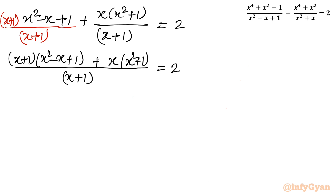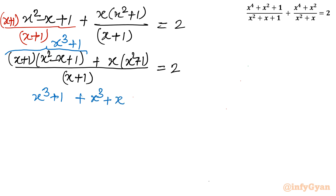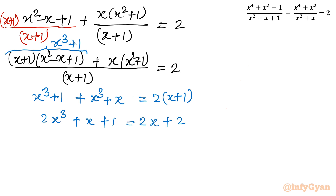The first term (x + 1)(x² − x + 1) is the identity for x³ + 1, since (a + b)(a² − ab + b²) = a³ + b³. So the numerator becomes x³ + 1 + x³ + x = 2(x + 1), i.e. 2x + 2. Bringing all terms to the left-hand side: 2x³ − x − 1 = 0.